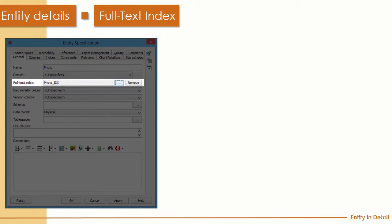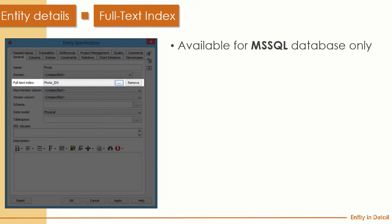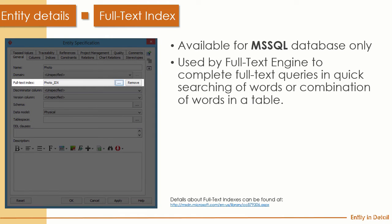The second property is Full Text Index. This property is only available in Microsoft SQL Server, so specifying it is only effective when you generate for MS SQL Server. It is used to specify fields that can run in the full text engine — like a search engine — making queries on specific text very efficient. For more detail, visit the Microsoft website listed at the bottom of the slide.